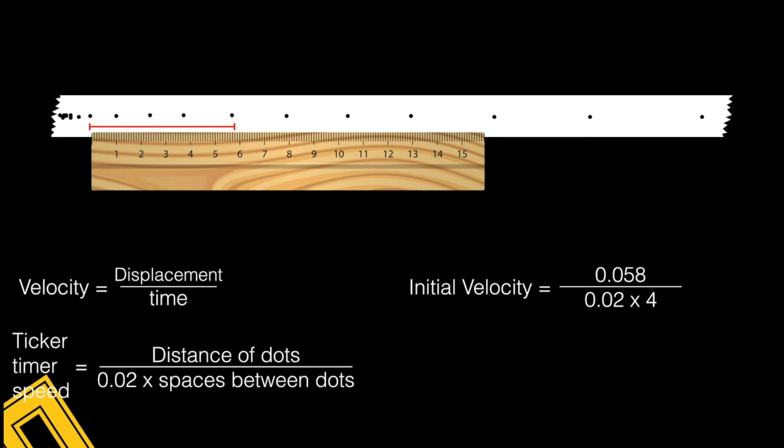So I've got 0.058 meters and there's four intervals, times that by 0.02, gives me an initial velocity u of 0.0725 meters per second.